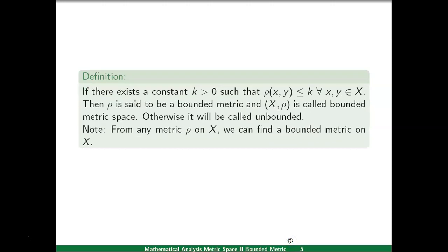Now let us define a bounded metric. If there exists a constant k greater than 0 such that rho xy is less than or equal to k for every x, y belonging to X, then rho is called a bounded metric and the pair X comma rho will be called a bounded metric space. If it is not so, then it will be called an unbounded metric.